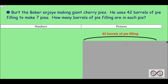Bert the baker enjoys making giant cherry pies. He uses 42 barrels of pie filling to make seven pies. How many barrels of pie filling are in each pie? Let's do a close read of this sentence by sentence, and see if we can tease out the math clues. First sentence: 'Bert the baker enjoys making giant cherry pies.' Interesting visual, but just story information.